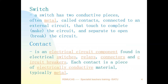A switch has two conductive pieces of metal called contacts connected to an external electrical circuit. They come together to complete or make the circuit, and separate to open or break the circuit. When the term 'make' is used, the contact has a connection, while 'break' means the contact is open. A contact is an electrical circuit component found in switches, relays, connectors, and circuit breakers, typically made of electrically conductive metal.